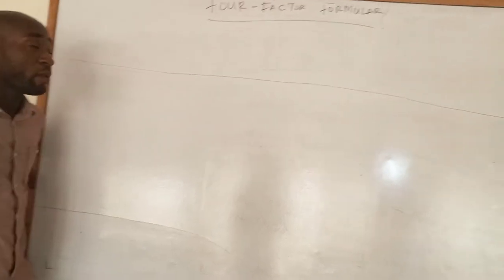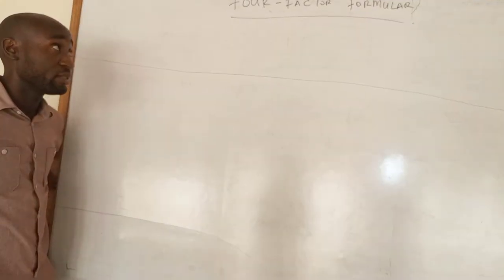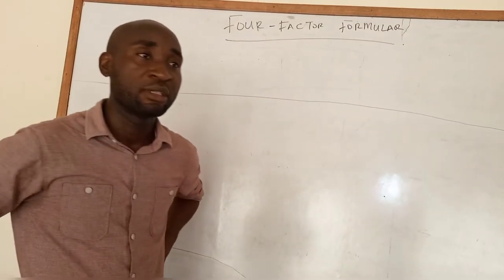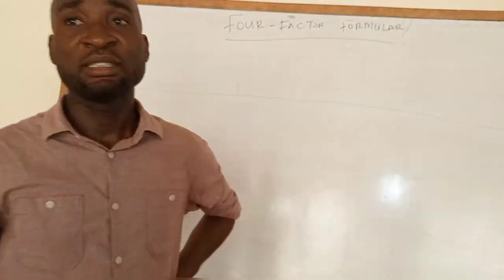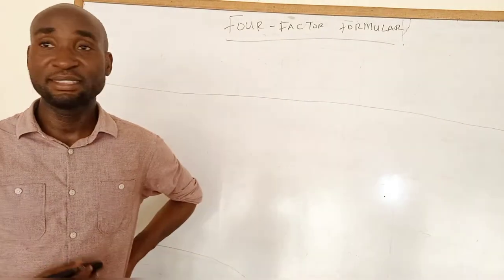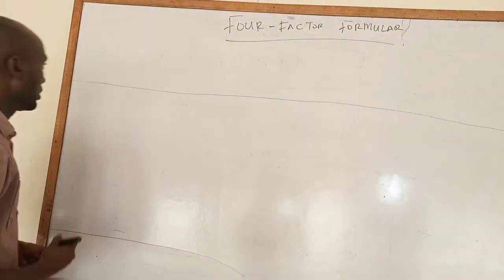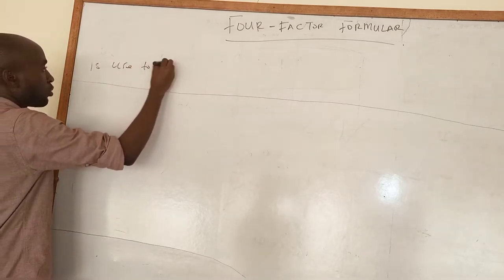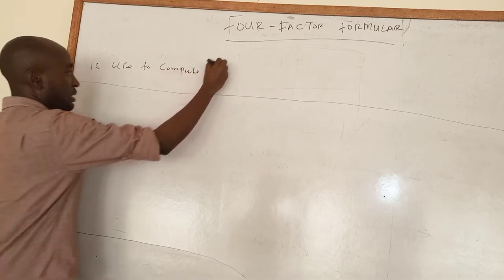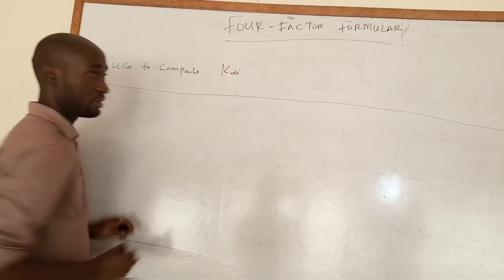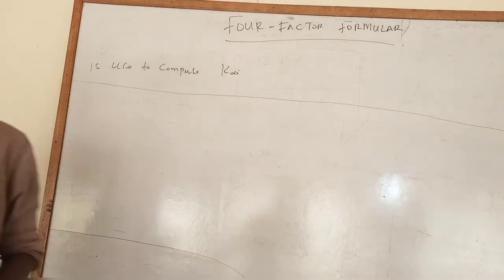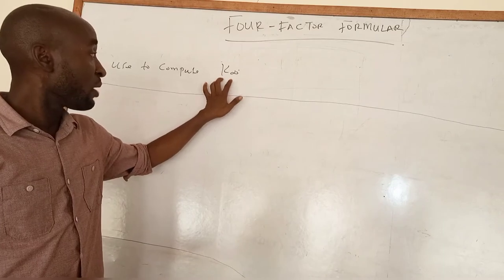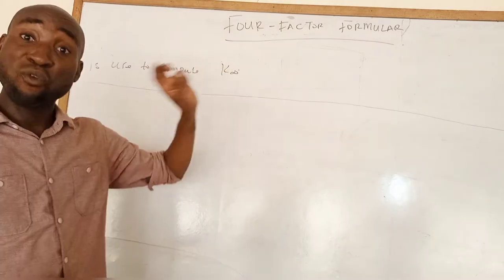Welcome. Today we want to look at the four-factor formula. This four-factor formula is actually used to calculate the multiplication factor in an infinite reactor — that is, it is used to compute k-infinity. We are going to explain k-infinity in terms of these four factors.